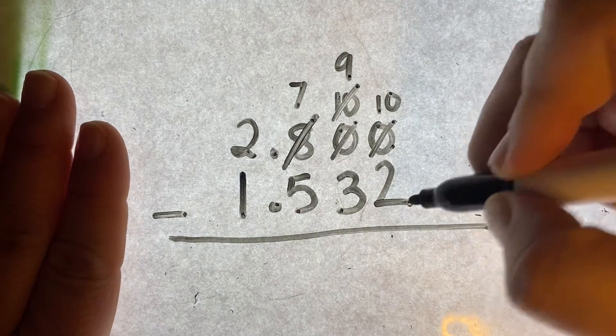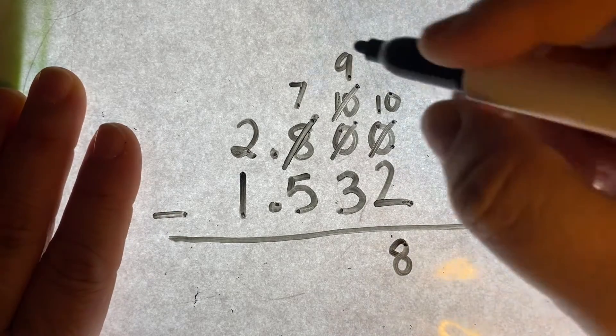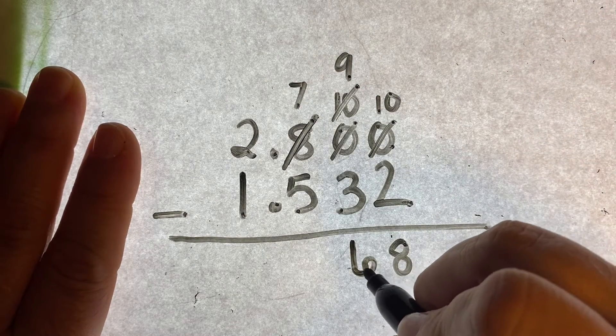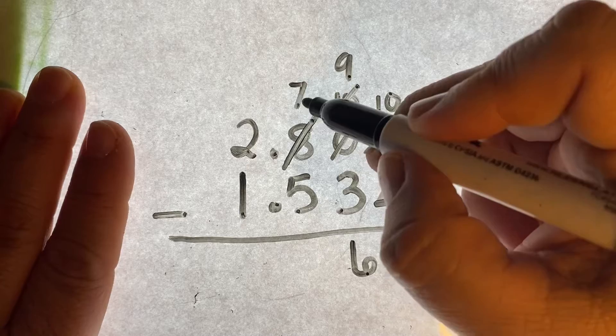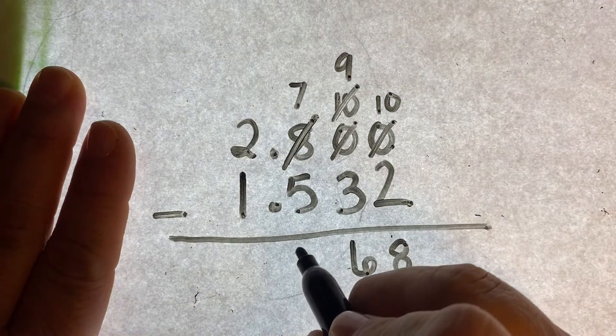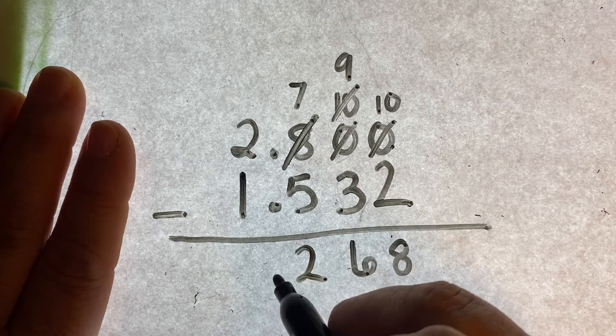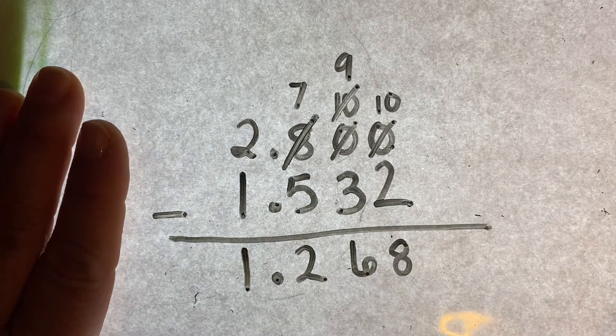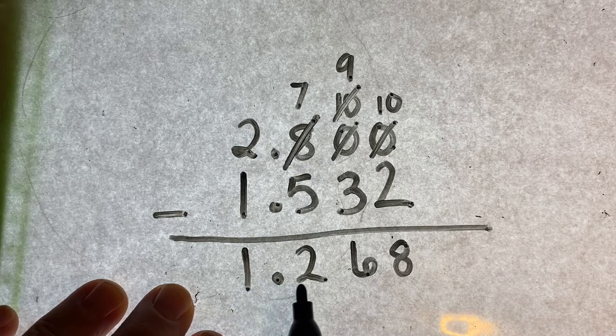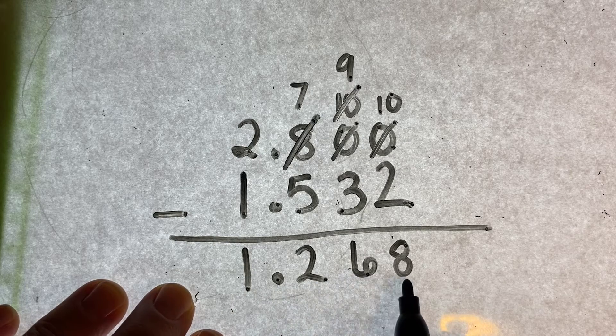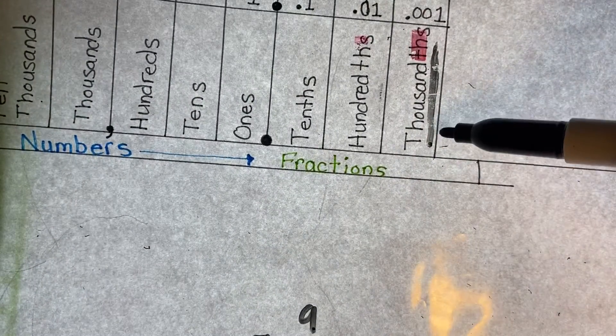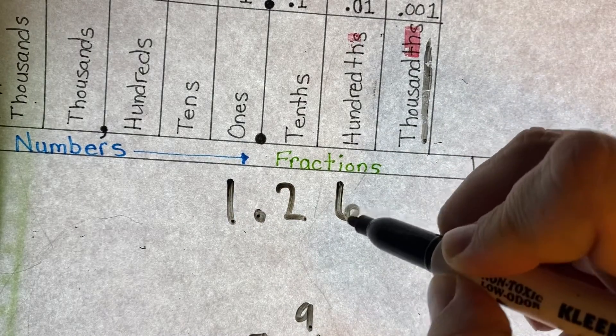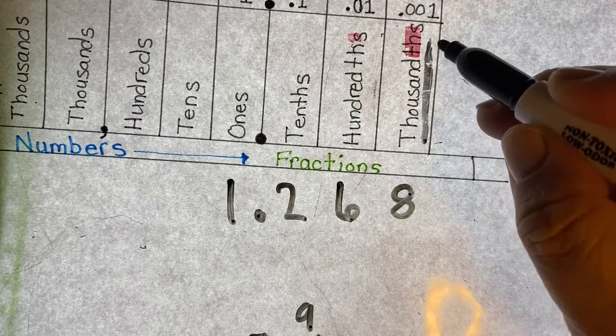Ten, take two away, eight. Nine, take three away, six. Seven, take five away, two. Bring down the decimal, and two minus one is one. So I have one and two hundred sixty-eight thousandths. One and two hundred sixty-eight thousandths is my answer.